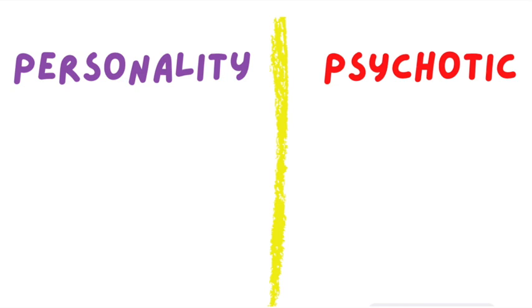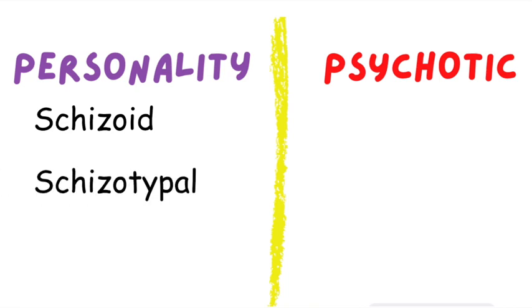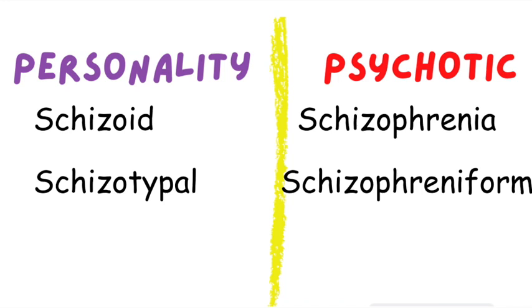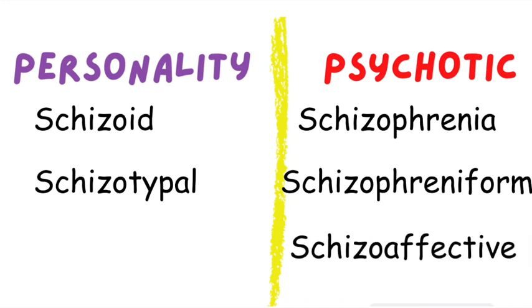There are many disorders in psychiatry that have the prefix schizo. They sound alike, however they have different definitions and they can be divided into two groups: personality disorders and psychotic disorders. Schizoid and schizotypal are personality disorders. However, schizophrenia, schizophreniform, and schizoaffective have psychotic features. But for this video, we will be focusing on the personality disorders.